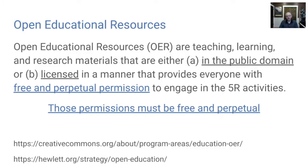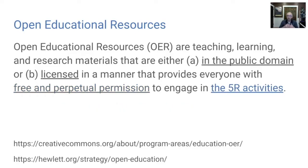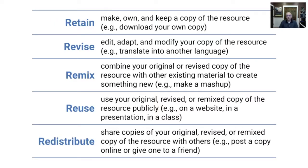And finally, this free permission for the term of the copyright must give you permission to engage in what we call the 5R activities. The first of the 5Rs is retain. Retain means that you have permission to make, own, and keep a copy of the resource. You can download your own copy right to your computer, to your phone, to your tablet, and you can keep it forever. It won't delete itself, it won't stop working after 6 months — it's not a subscription service you have to keep paying for month after month. You just get to download a good old-fashioned copy and keep it forever.